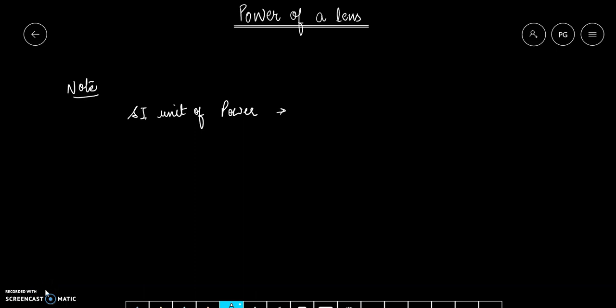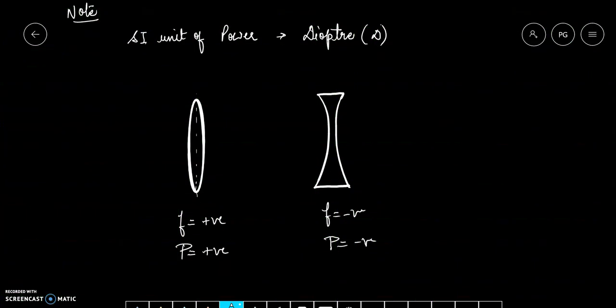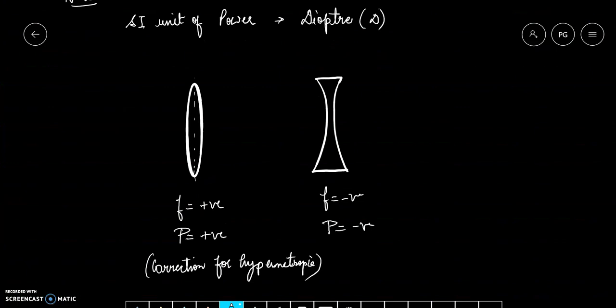The focal length of convex lens is positive and concave lens is negative. It means that the power of convex lens is positive and the power of concave lens is negative. Convex lens is used for hypermetropia correction and concave lens is used for correction of myopia.